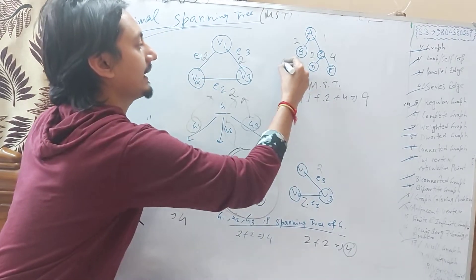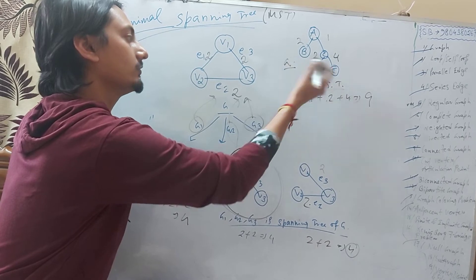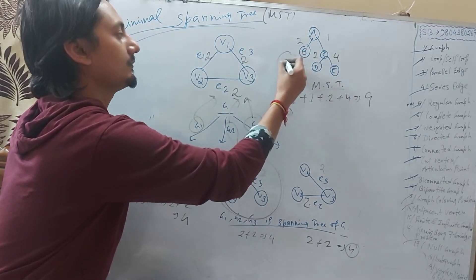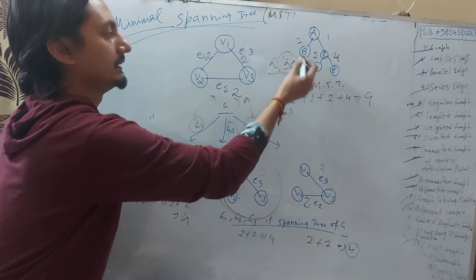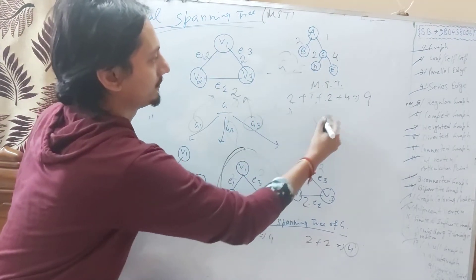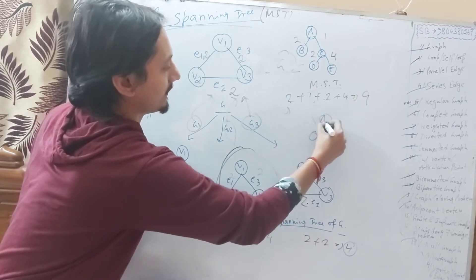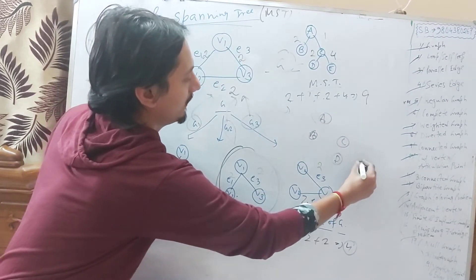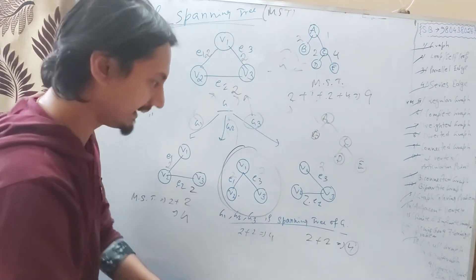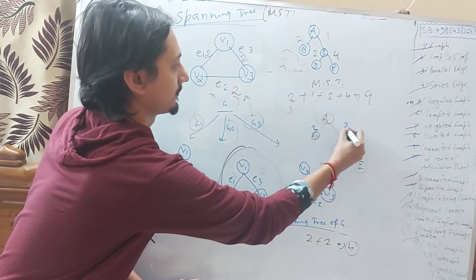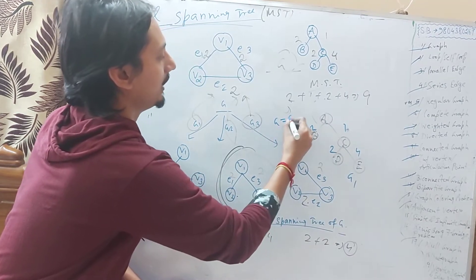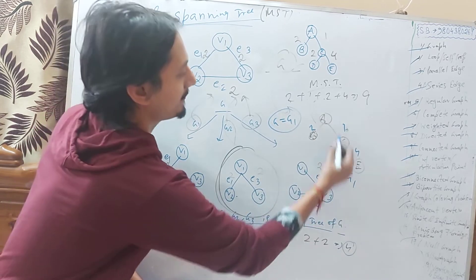So graph G, graph G1 is equal to G1. The minimum spanning is equal to G9.